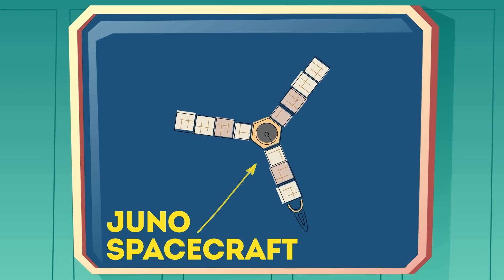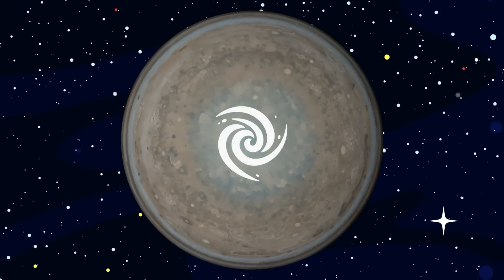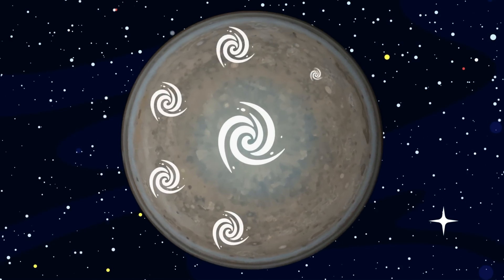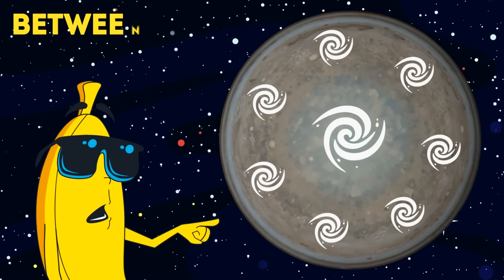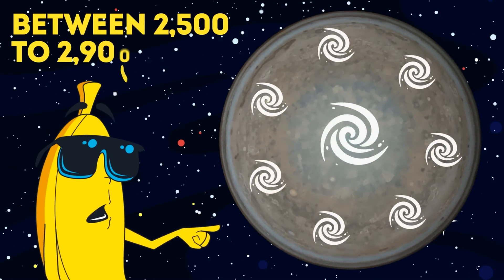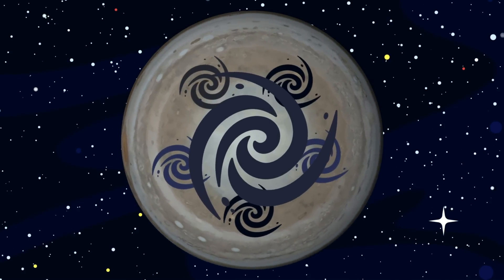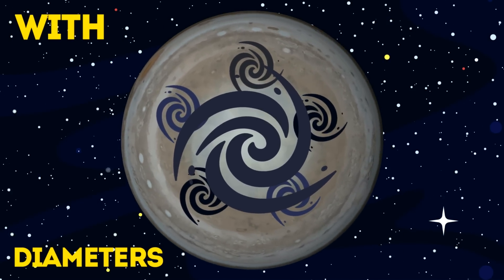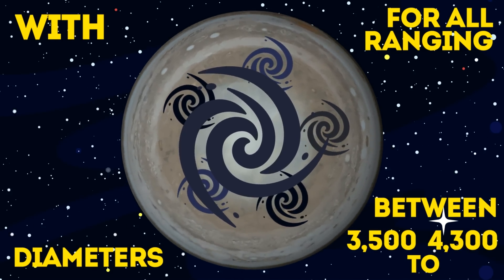Jupiter's Storms. NASA's Juno spacecraft reveals massive cyclones in the Jovian atmosphere. Jupiter's North Pole features one cyclone surrounded by eight similarly-sized cyclones with diameters averaging between 2,500 to 2,900 miles. Its South Pole includes a single cyclone surrounded by five swirling counterparts with diameters ranging between 3,500 to 4,300 miles.